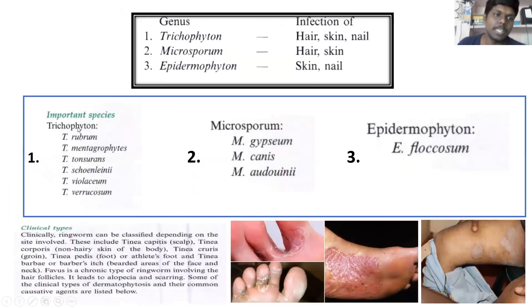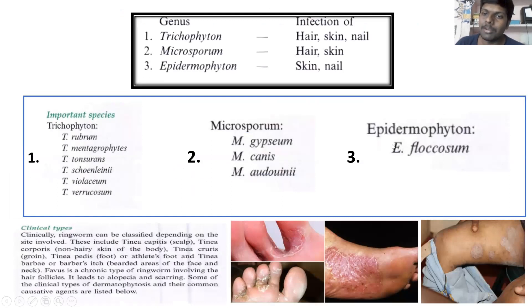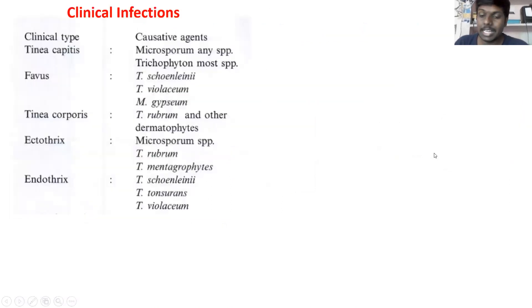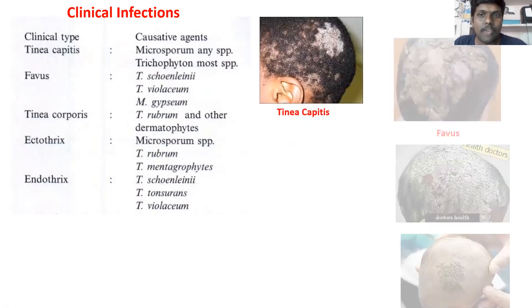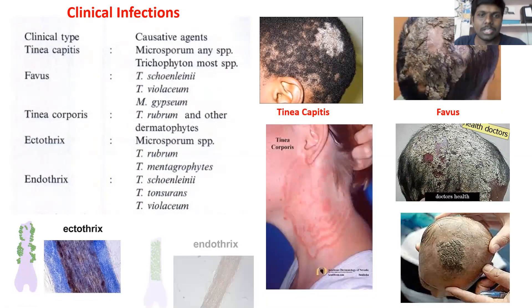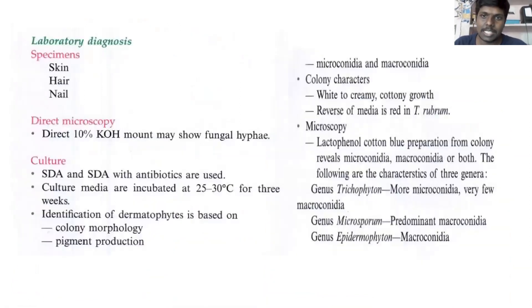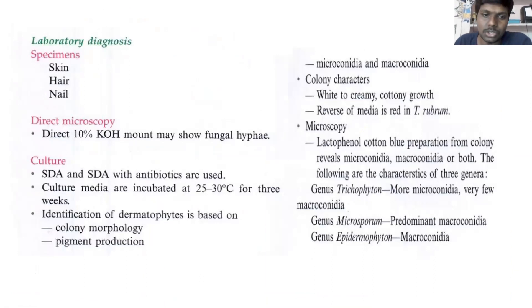Trichophyton species include T. rubrum, T. mentagrophytes, T. schoenleinii, T. violaceum, and T. verrucosum. Microsporum species include M. gypseum, M. canis, and M. audouinii. Epidermophyton has one species: E. floccosum. Clinical infections include tinea capitis, favus, tinea corporis, ectothrix, and endothrix. Laboratory diagnosis uses skin, hair, or nail specimens with KOH direct microscopy and SDA culture at 25–30°C for 2–3 weeks.